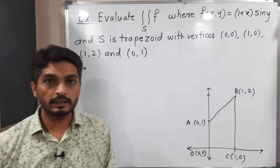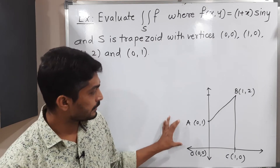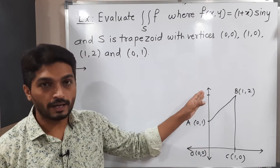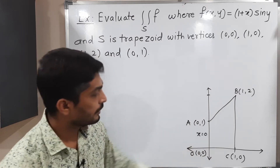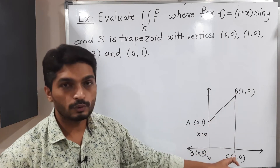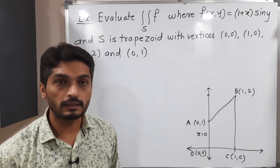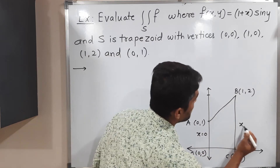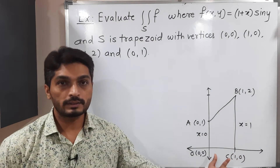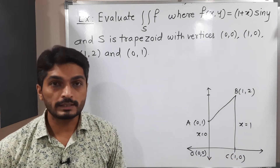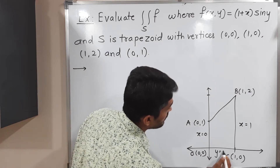Let us find equations of all these lines. Equation of OA: this is a part of the y-axis, so its equation is x = 0. Consider BC: it is a line parallel to the y-axis passing through x = 1, so its equation is x = 1. Segment OC is a part of the x-axis, so its equation is y = 0.